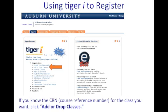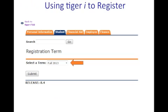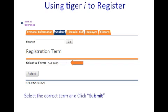If you already know the CRNs — which is the five digit course reference number for your classes — go ahead and click the Add or Drop Classes option under Registration. Clicking on Add or Drop Classes will bring you to this page, where you would pull down the Roll Down button and select Fall 2013, which is the upcoming semester. Then click Submit.